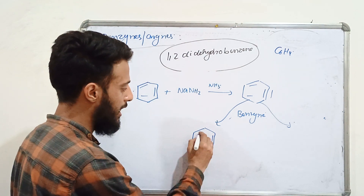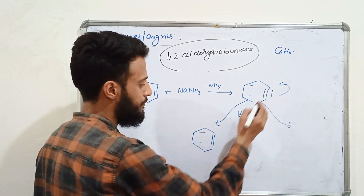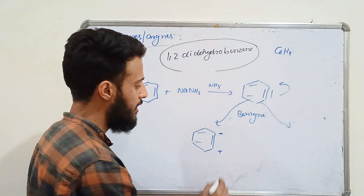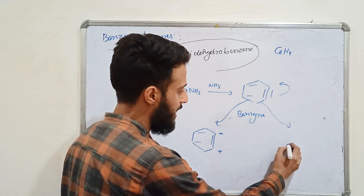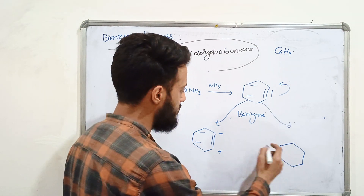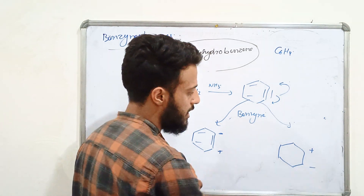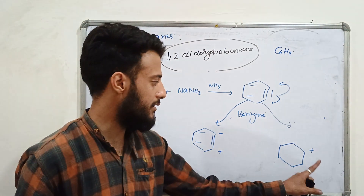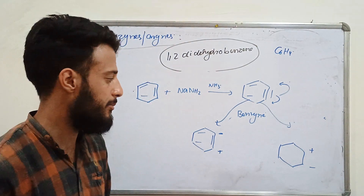In benzyne, there are electrons present and there are vacant orbitals present. A second dipolar structure also exists in which these electrons are transferred, creating an electron-rich side and an electron-deficient side.